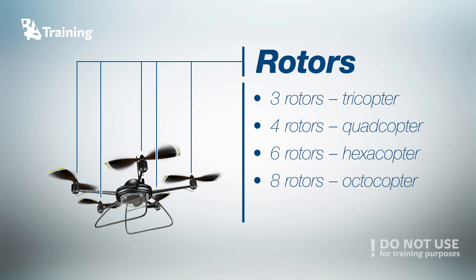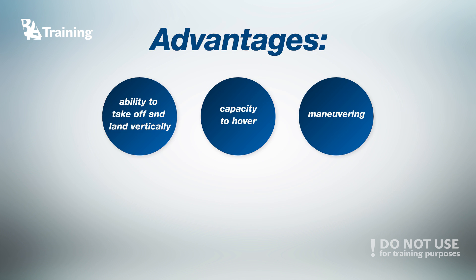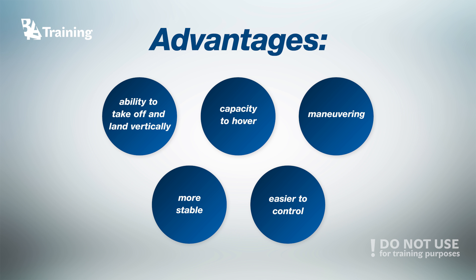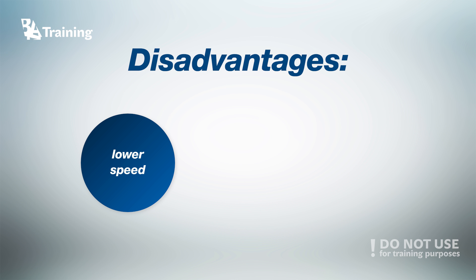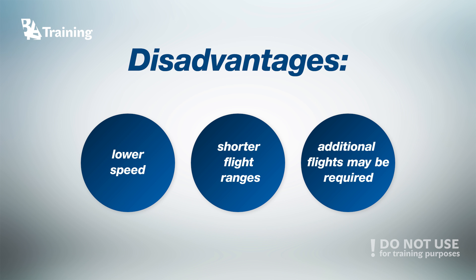There are also more unusual setups like 12 or 16 rotors. Multi-rotors have similar advantages to rotary-wing drones, but they are even more stable and easier to control. One disadvantage is that due to their low speed and short range, the operator may require many additional flights to survey significant areas, which will increase time and operational costs.